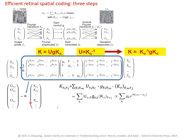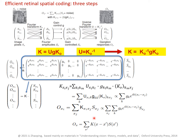Because K(xi, xj) depends only on xi minus xj, the output at xi is a sum over xj of this kernel times the input, which is a convolution. Writing xj as x prime and xi as x, the output function is the spatial convolution of the input image function. So this whole transform is a spatial filter in convolution form.